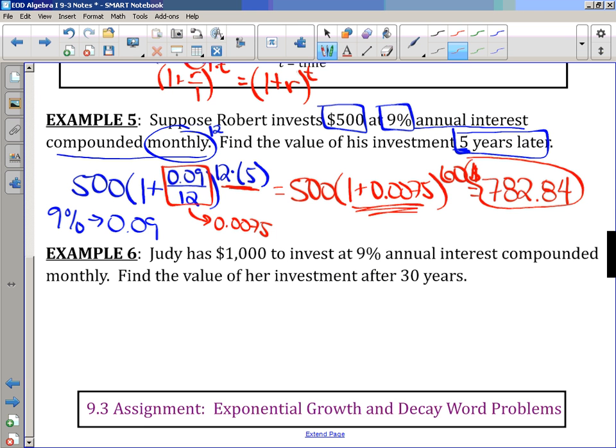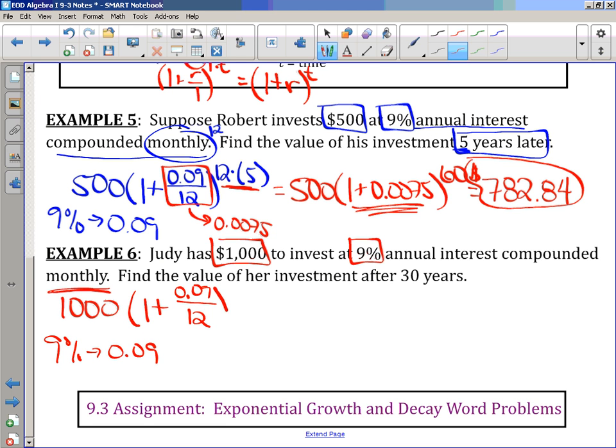One more example. Judy has $1,000 to invest at 9% annual interest compounded monthly. So there's the monthly again. Find the value of her investment after 30 years. So my principal is $1,000. Again, 9% compounded monthly. So 9% is .09. I'm going to do 1 plus .09 over 12. Where did the 12 come from? This right here, because of monthly. And then to the 12 times my time, how many years, which is 30 years.